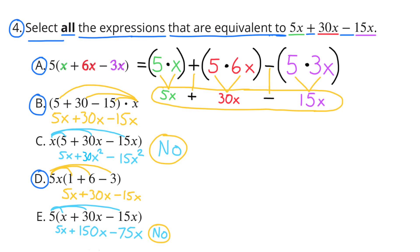Let's look at E. 5 times X plus 30x minus 15x. 5 times X is 5x, plus 5 times 30x is 150x. That's not going to work. That's not equivalent. So, I would go with A, B, and D.